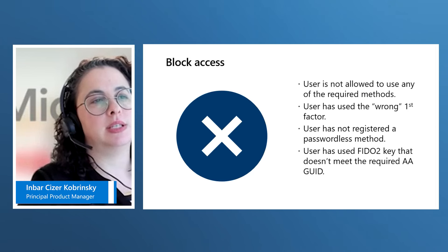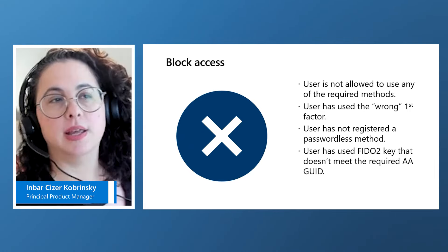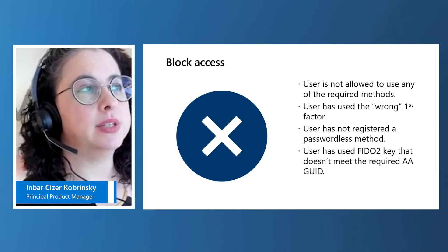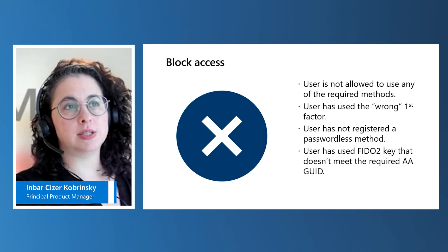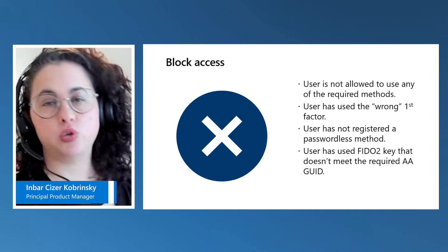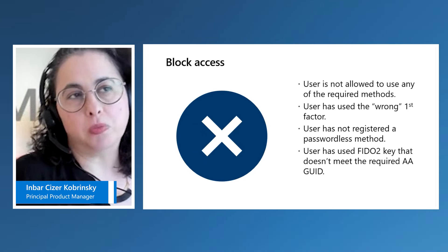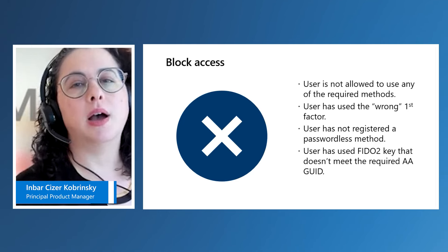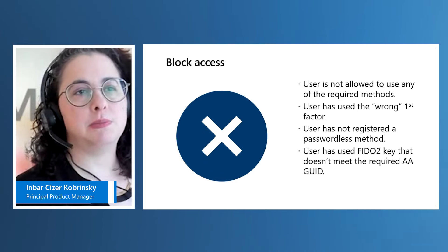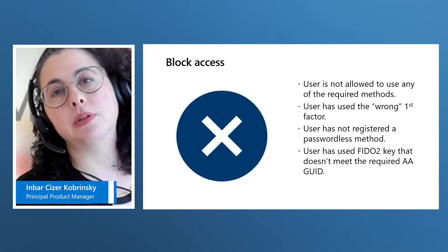There could be a few reasons why a user is blocked from access. First, the user is not allowed to use the required method — for example, if the authentication strengths policy requires FIDO2 or Temporary Access Pass, but they don't currently have a Temporary Access Pass, or they're not allowed by the authentication method policy to use FIDO2, they're unable to move forward. Second, going back to the idea of some methods being available as first factor versus second factor — if you want to require Windows Hello for Business but the user started signing in with a password, they may end up in a blocked situation because we're unable to prompt them for Windows Hello for Business.